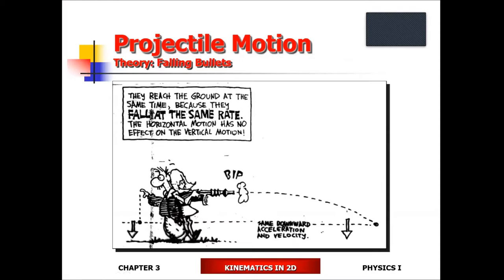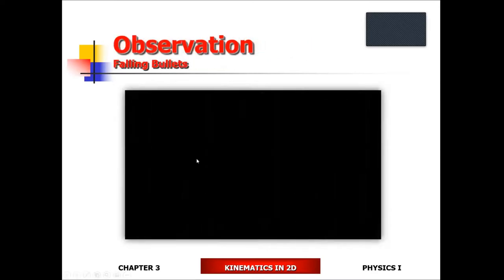Both bullets will land at the same time — that statement is correct. In the absence of air friction, both bullets land at the same time. Free fall is motion under the influence of gravity and gravity only. In free fall, everything falls at the same rate regardless of weight — and it just so happens everything still falls at the same rate regardless of how fast they're moving horizontally. So it doesn't matter how fast something's moving sideways — it still falls at the same rate due to gravity. That's what physics says. The MythBusters decided to investigate.